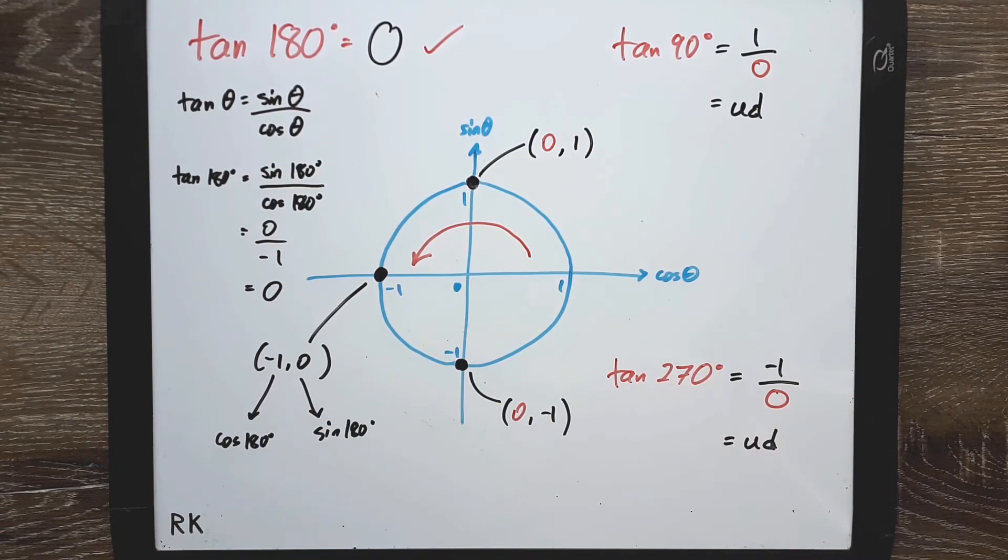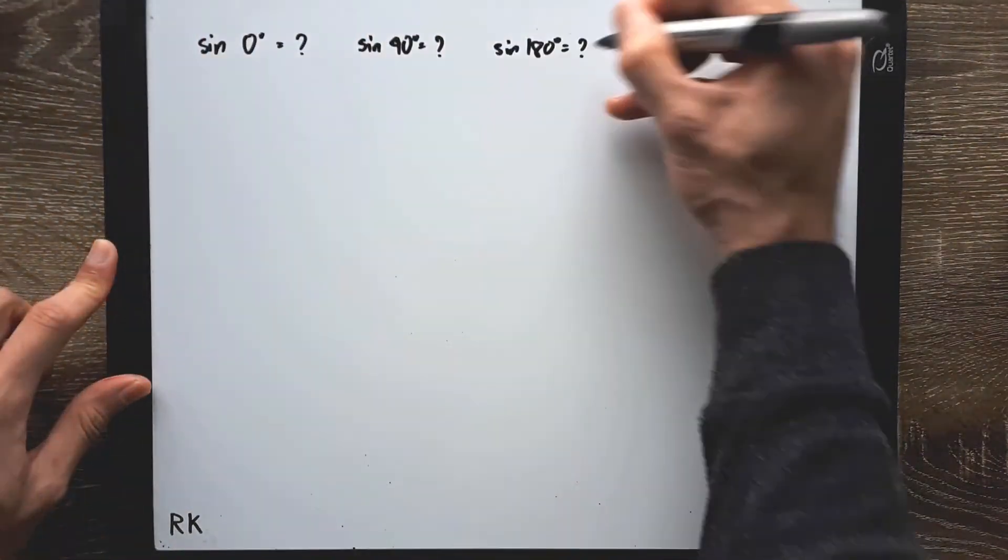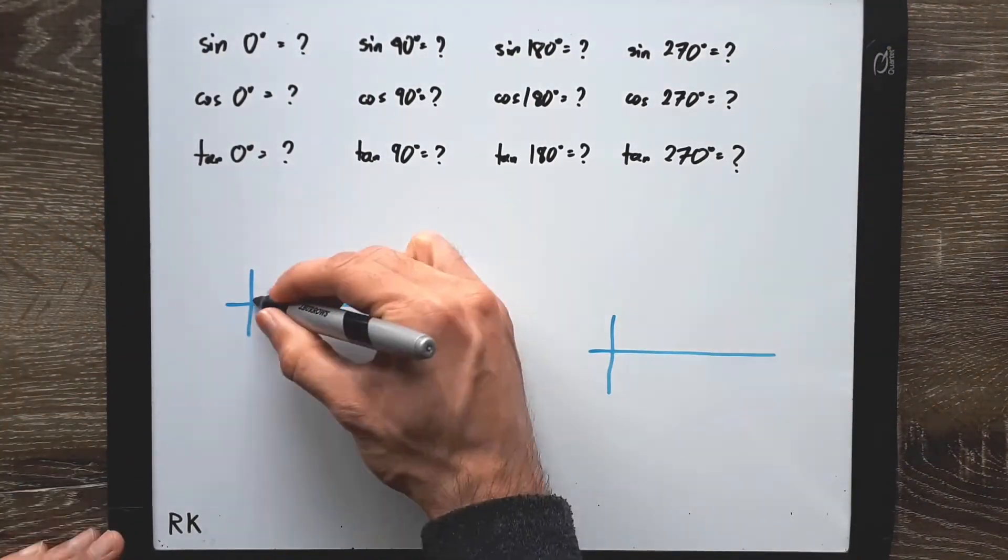So that's how you find trigonometric ratios with quadrantal angles. They're also quite useful for sketching your basic sin cos and tangent curves.